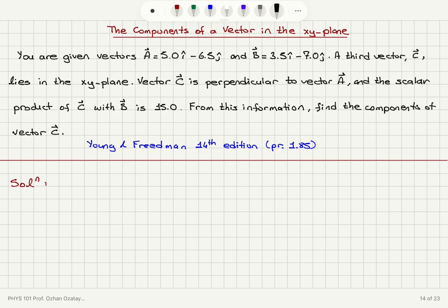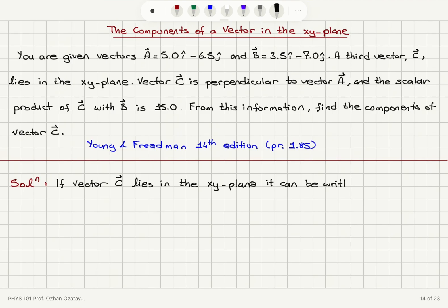The first information I want to utilize is the fact that this third vector C is in the x-y plane. So if vector C lies in the x-y plane, it can be decomposed into its components. It can be written as vector C equals C sub x î plus C sub y ĵ.